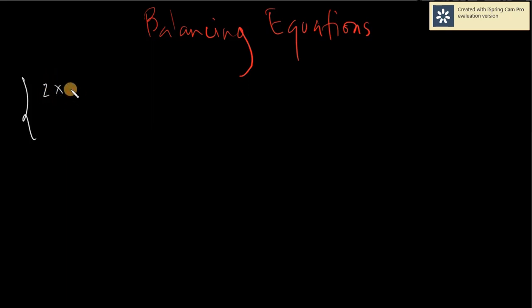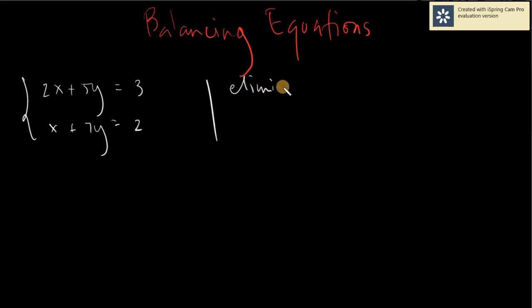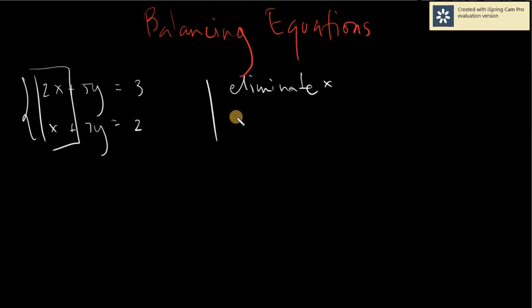Say we have 2x plus 5y is equal to 3, and x plus 7y is equal to 2. The thing that we need to do here is we need to eliminate. And when we want to eliminate something, it must be balanced. For example, you are being asked to eliminate x. So what you need to do is make sure that the x's here are balanced — when you will be trying to eliminate, the x's must be the same.